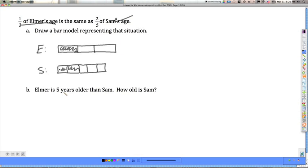It says Elmer is five years older than Sam. How old is Sam? Well, in order to solve problems using bar models, we need to have the units be the same size. Here I've got smaller units than what I've got up here, but I do know that two of these is equal to one of those. So I'm going to cut these in half so they're all equal to the same amount.